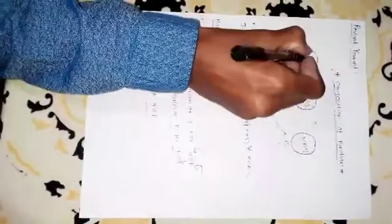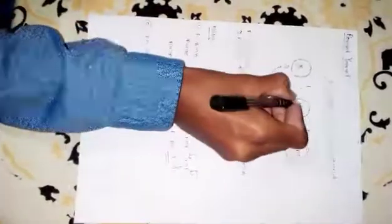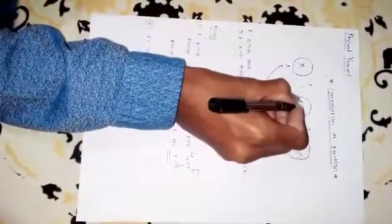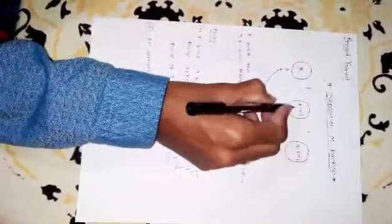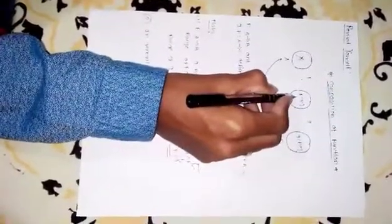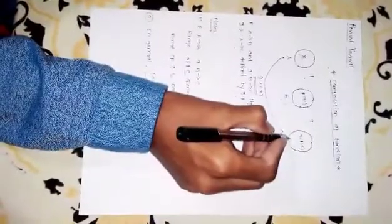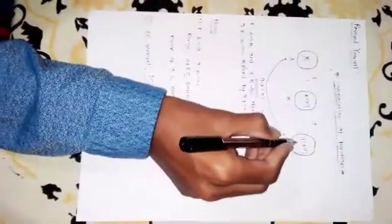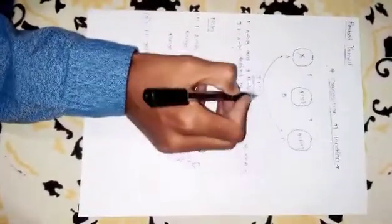I take a random element X. After applying function F, that becomes F of X. Further, also considering F of X as an element, after applying function G, it becomes G of F of X. In short, the function which is moving from A to C is defined as G of F of X.